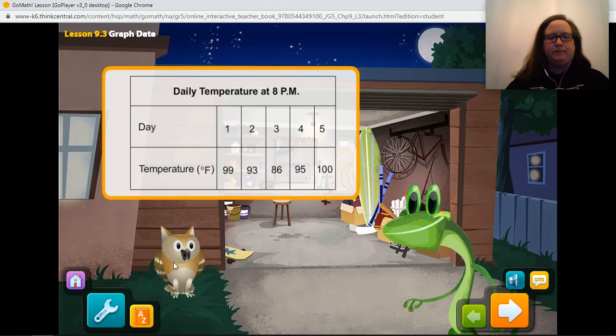You know, the temperatures have changed every day. Is there a better way to display the data? Maybe we should display the data in a coordinate grid. Well, why don't we see how to do that? Ready? Let's go!